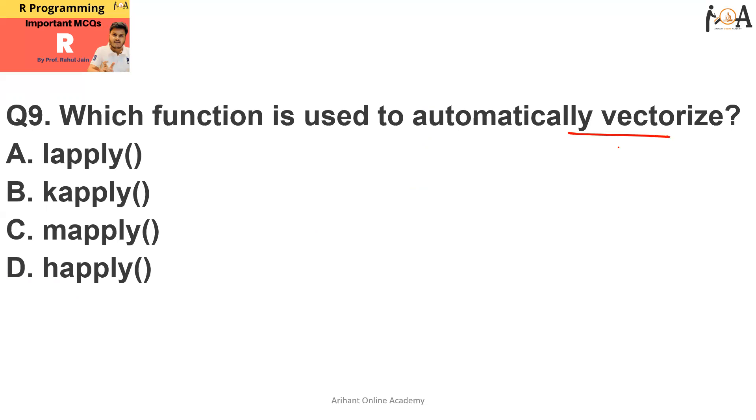Question number nine is which function is used to automatically vectorize? Basically, for automatically vectorizing, we use mapply. So option B is the correct answer. Mapply is the correct function that we use for automatically vectorizing our program.